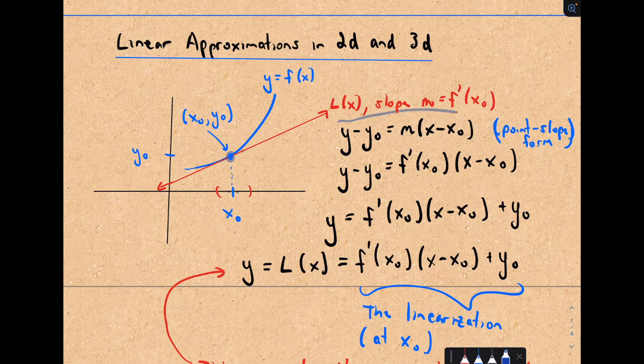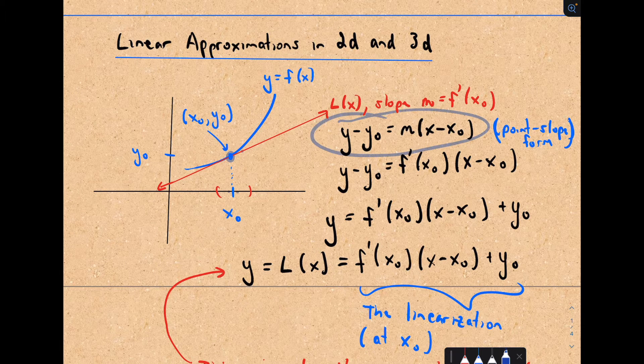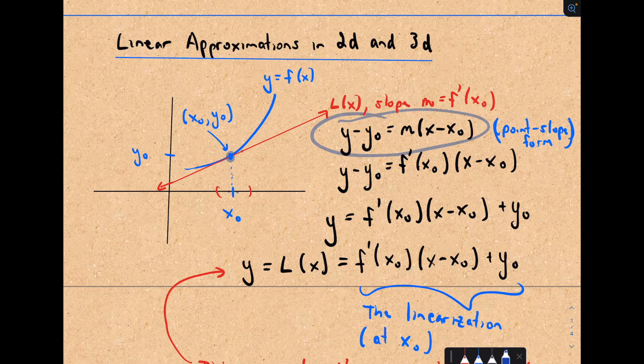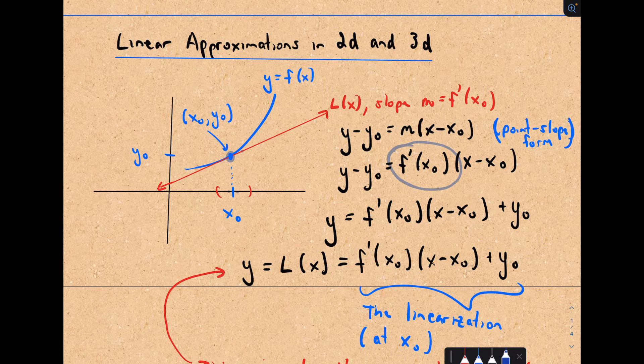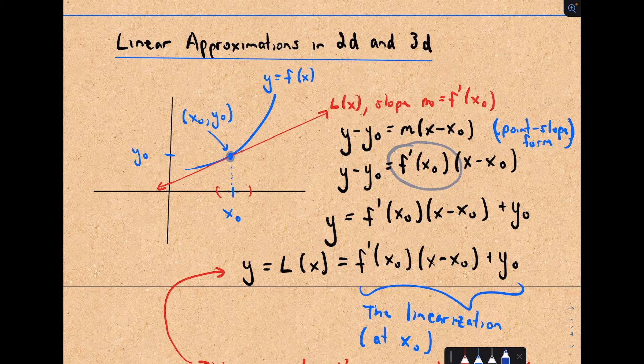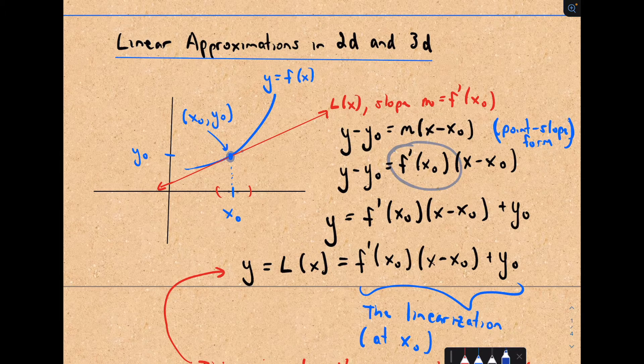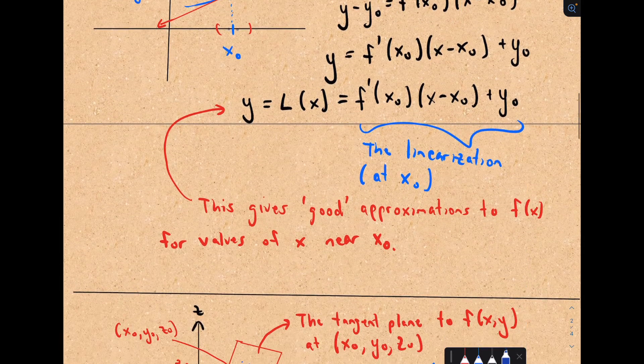We just use the equation of a line: y minus the y coordinate equals the slope multiplied by x minus the x coordinate, and we know that the slope of the tangent line comes from finding the derivative and plugging in that x coordinate.